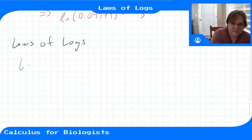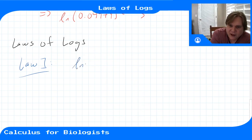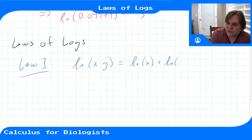So law number 1, our law 1 for law of exponents was that when we multiply two exponentials together, you add the exponents. So this is the opposite. If I start with a multiplication on the inside of these logs, that separates out into an addition of the logs.